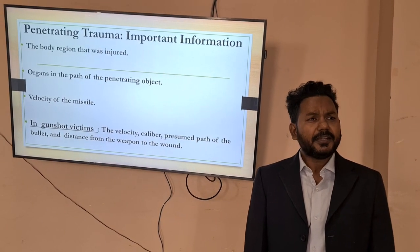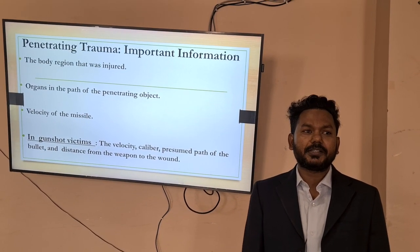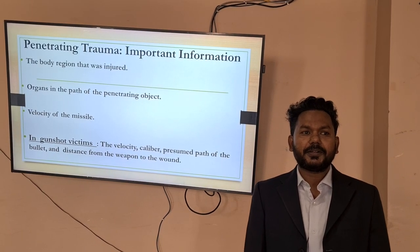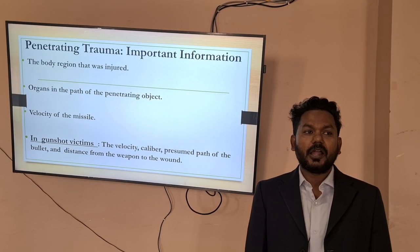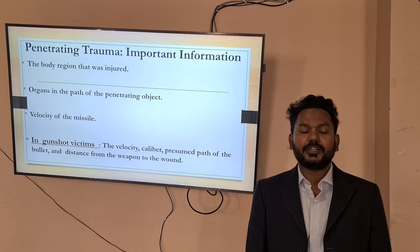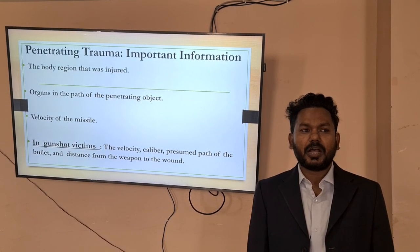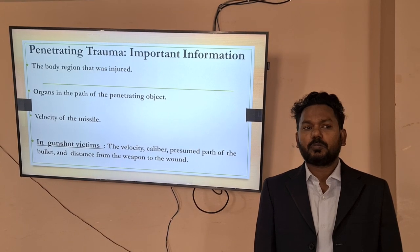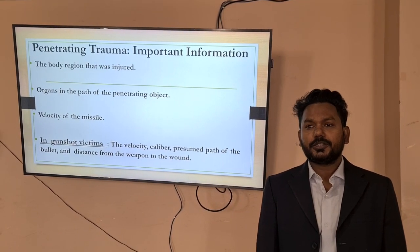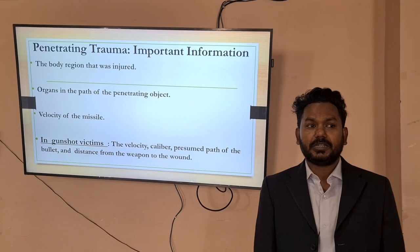In penetrating trauma we need to know about the body region that was injured, organs in the path of the penetrating object, velocity of the missile, and in gunshot victims we need to know about the velocity, the caliber, the presumed path of the bullet, and distance from the weapon to the wound. All this information gives an idea about the extent of the injury.